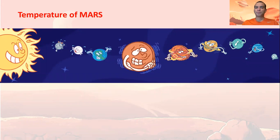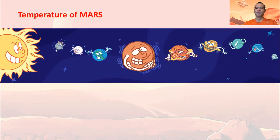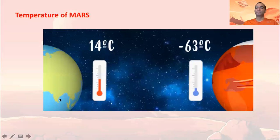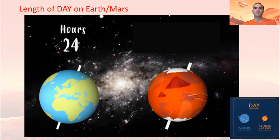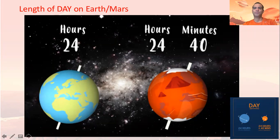A detail about Mars is the temperature. You know the Earth's temperature is 14 degrees, but on Mars the temperature is minus 63 degrees. About the length of one day on Mars, it's more than 24 hours — one day on Mars is 24 hours and 40 minutes. All of this information you can check in our material with more detail.